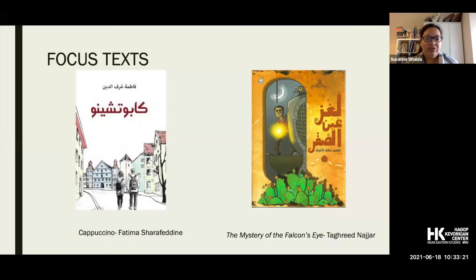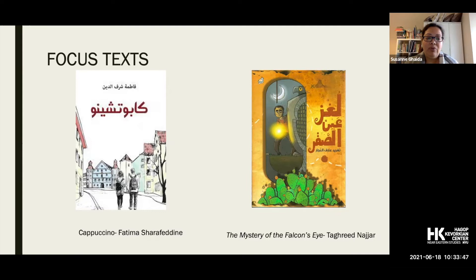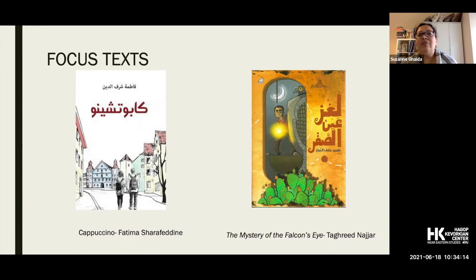Briefly: 'Cappuccino' is told from two points of view — Anas, a boy whose mother is a victim of domestic violence, and Lina, a girl whose father died and whose uncle has taken control of the family fortune. 'The Mystery of the Falcon's Eye' features Ziyad, a refugee living in a camp in the West Bank near the Qalandia checkpoint. His father has been detained, he has left school to work, and his younger brother needs an operation. He gets the idea of returning to his great-grandparents' village to reclaim his grandmother's trousseau and sell the gold to fund the operation.